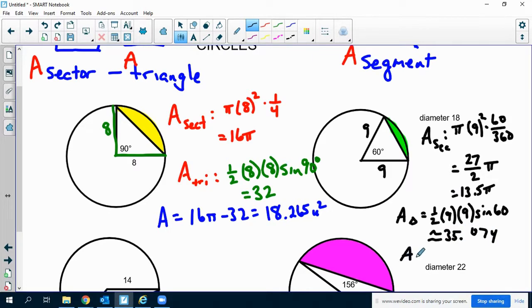So the total area of the segment is going to be the first one minus the second one, which if I type that in the calculator, I get 7.337 units squared.